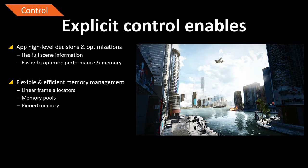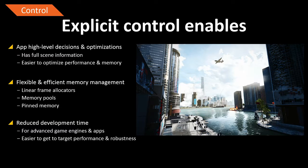We know how we stream data in our game engines, how we load sections of levels, and it's fairly trivial to connect that with specific memory pools. We can use pinned memory when we know both the CPU and GPU will cooperate on the same memory location. Overall, this explicit control actually reduces development time for large advanced game engines — the initial time is a bit longer, but the overall time to achieve good performance and robustness is reduced because we can take on more work initially and reuse it across multiple titles.